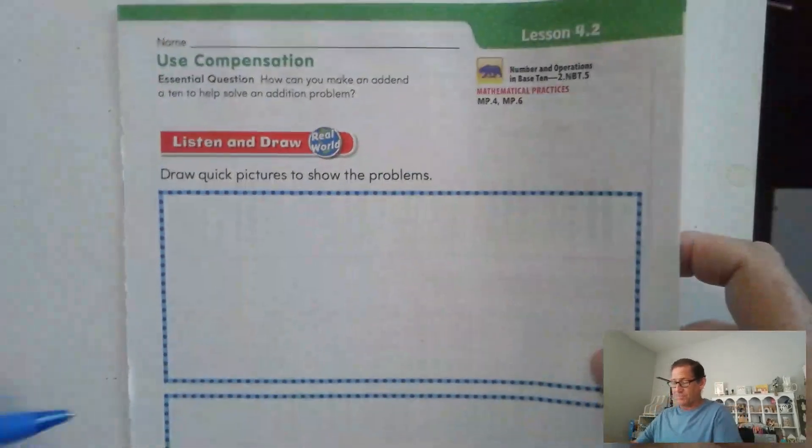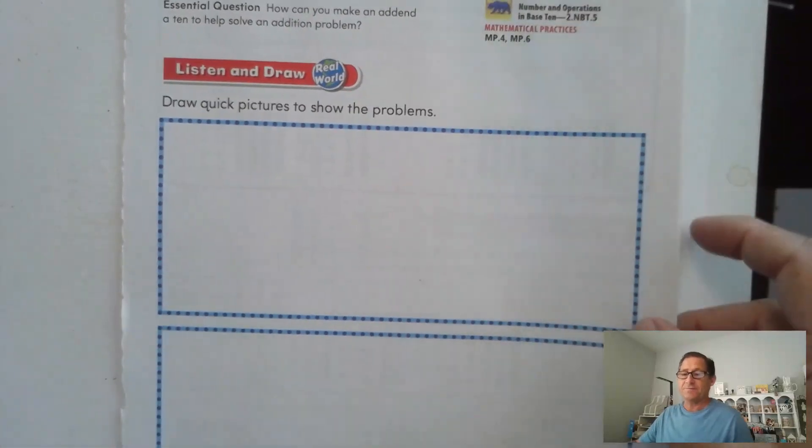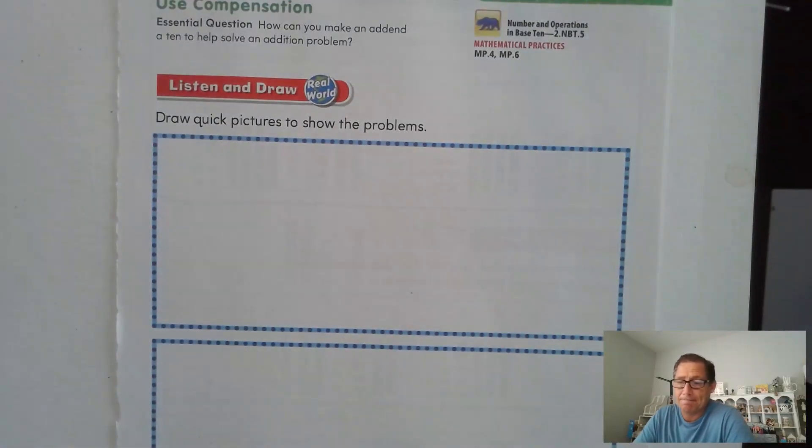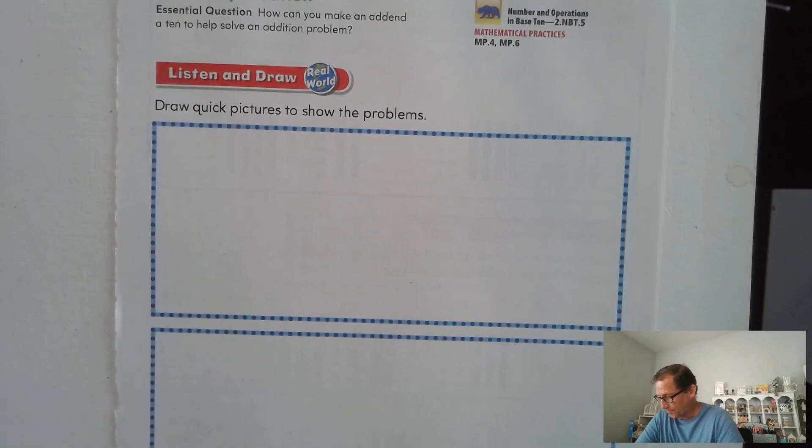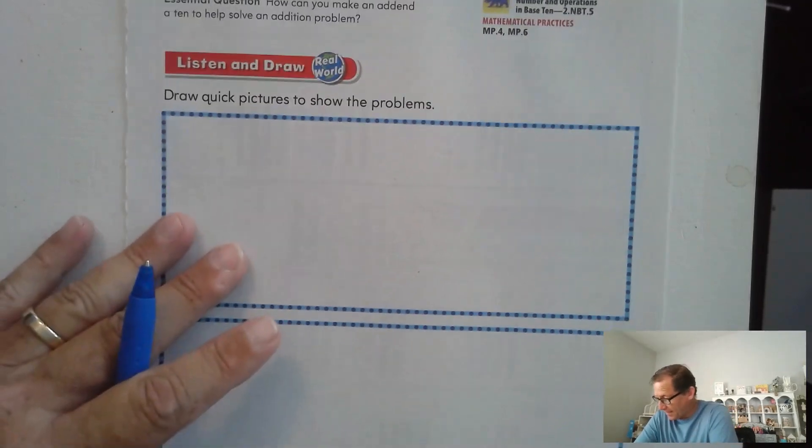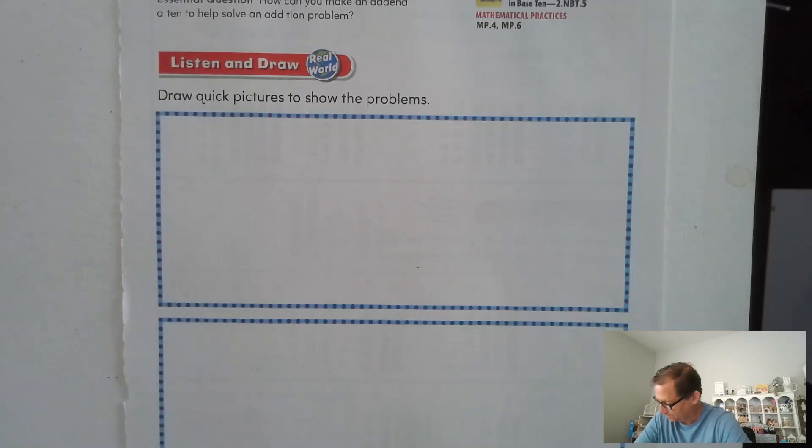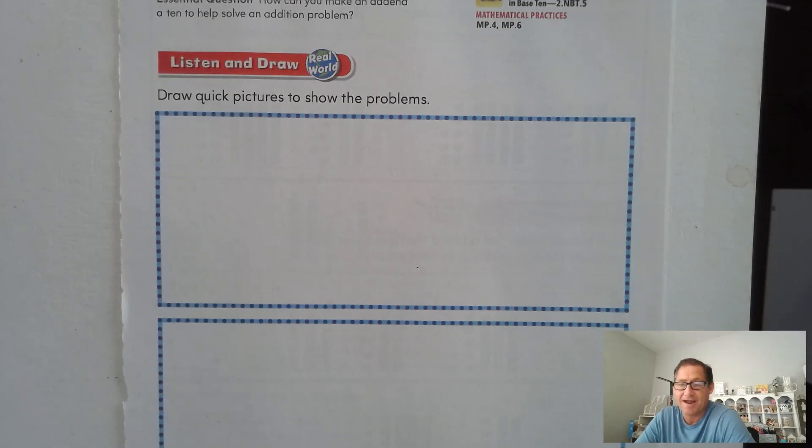So we have two problems here that I'm going to give you. Let's listen to the first one, and I want you to draw a quick picture. Remember, straight lines are 10s, and circles or squares will represent singles or ones. Here's the first problem. Kara has 47 stickers. She buys 20 more stickers. How many stickers does she have now?